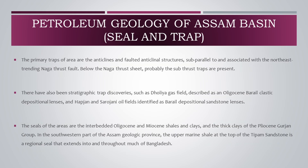Our next concern is seal and trap. The primary traps of the area are anticlines and faulted anticlinal structures, subparallel to and associated with the northeast trending Naga thrust fault. Below the Naga thrust sheet, sub-thrust traps are probably present. There have also been stratigraphic trap discoveries, such as the Dolia gas field, described as an Oligocene-Barail clastic depositional lens, and the Hapjan and Sarojini oil fields identified as Barail depositional sandstone lenses. The seals of the area are the interbedded Oligocene and Miocene shales and clays, and the thick clays of the Pliocene Gurjan group. In the southwestern part of the Assam Geologic Province, the upper marine shale at the top of the Tipam sandstone is a regional seal extending into and throughout much of Bangladesh.